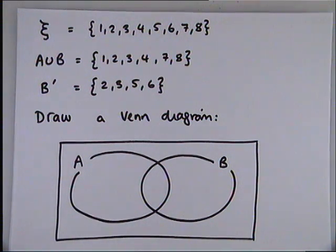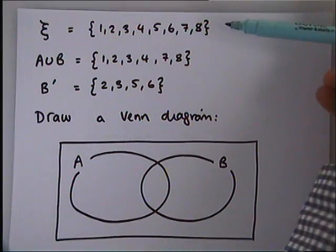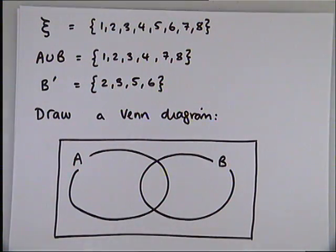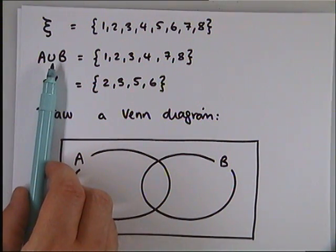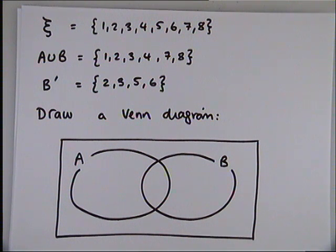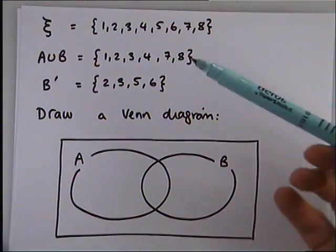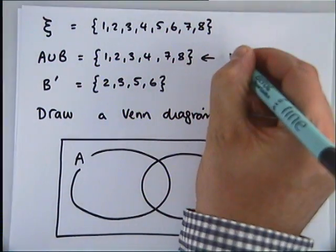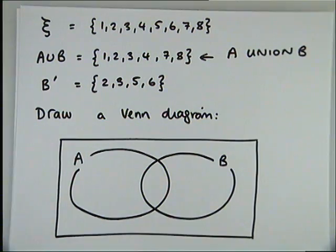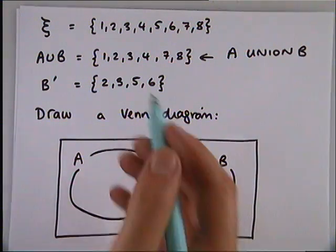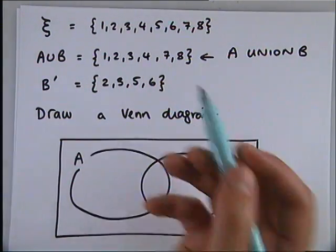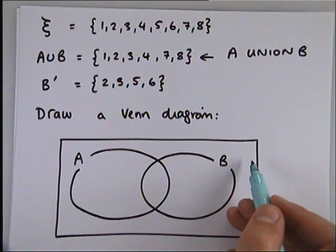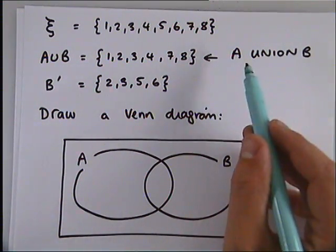Here's another example containing some slightly more advanced notation. Once again we have the universal set — all of the numbers in my diagram are going to be 1, 2, 3, 4, 5, 6, 7, 8 and they all need to go in this diagram. Then I have this strange U symbol — A union B. That U symbol means union, and what it stands for is the numbers that go into either A or B or both. The numbers in this set have to be inside one circle or the other or both — they cannot be outside the circles.